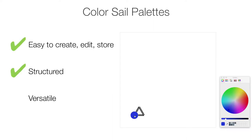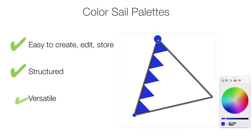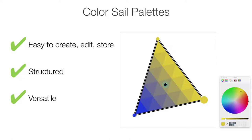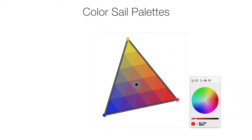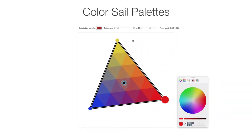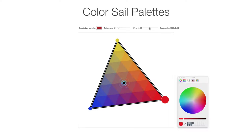In this work, we propose color sails — an equally interactive, simple, and structured color gamut representation that has a much higher representative power. A color sail is defined by three vertex colors and can span the range from discrete to continuous palettes with a patchwork parameter. In addition, an artist can change the default RGB blending behavior by putting wind into the sail, creating a custom blend that can approximate the behavior of real paint media.